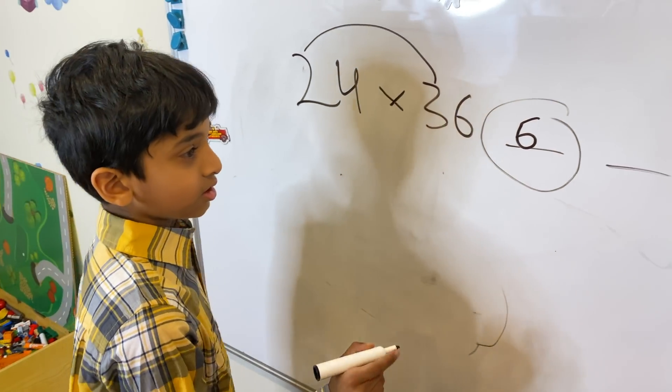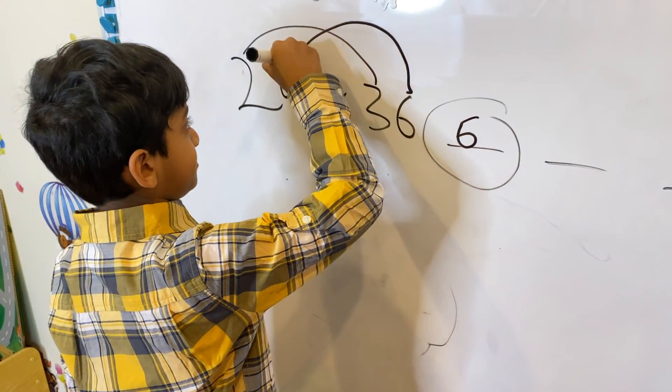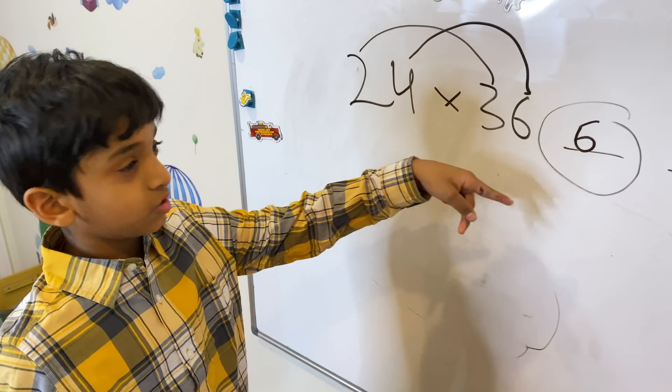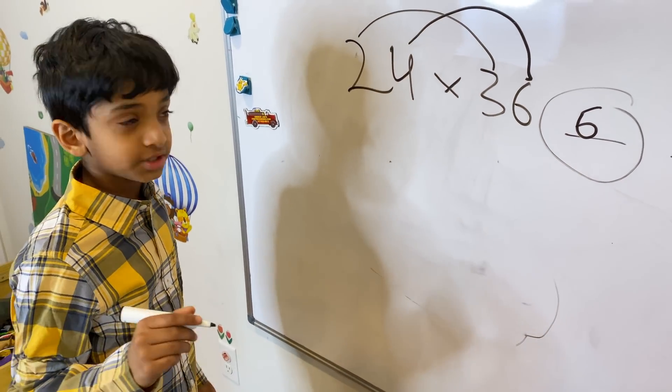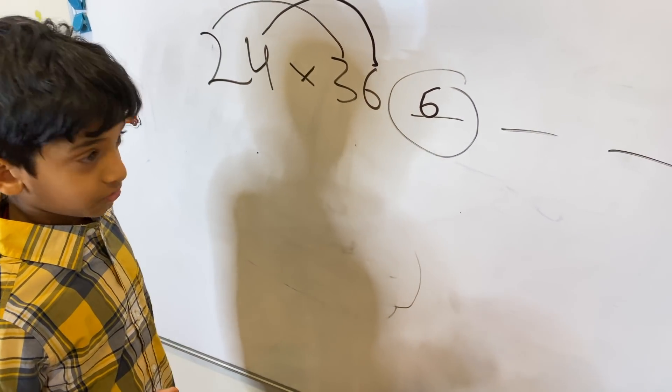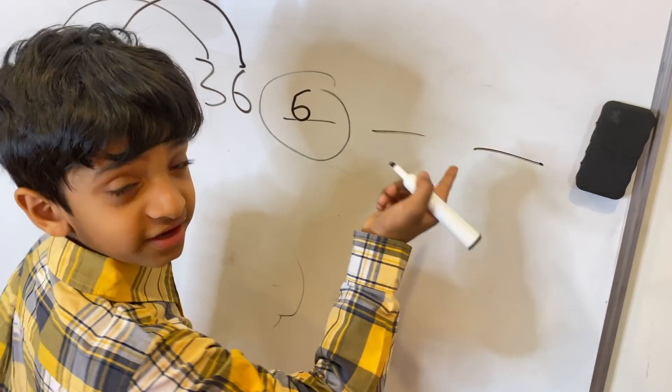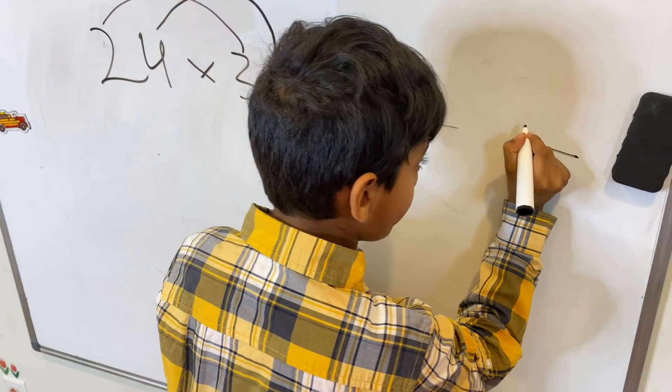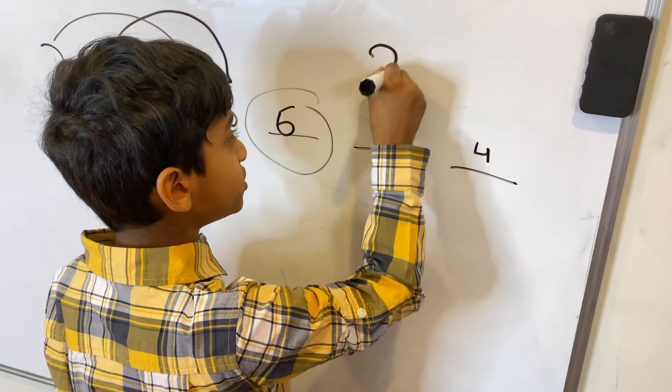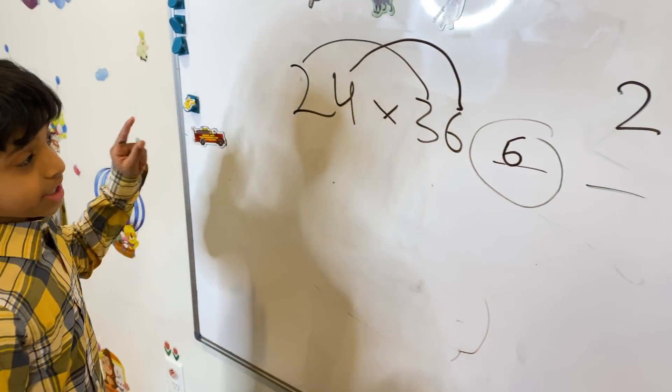Now let's do for the units place, the last 2 numbers. So 6 times 4 is 24. We can't put 24 in the units place, you know that. So let's put 4 here. And now let's carry over 2 here.